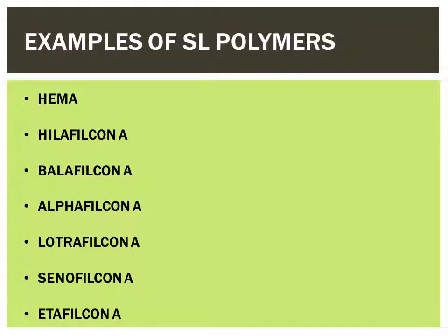Here are some examples of soft lens polymers. Starting with HEMA — hydroxylethyl methacrylate, or polymecon — that has been the first material introduced in hydrogel lenses. We see this material a lot in Bausch & Lomb lenses; their conventional lenses are made up of HEMA, which is a low water content material. Next comes Hilafilcon A, found in the Bausch & Lomb SL59 lens. Balafilcon A is in PureVision. Alphafilcon A in SL66 Toric. Lothafilcon A in Alcon lenses like O2 Optics and Air Optix Aqua. Then Senofilcon A in the 1-Day Acuvue TrueEye from Johnson & Johnson. Etafilcon A is also a Johnson & Johnson material, which is a high water content polymer material.